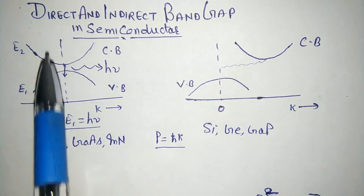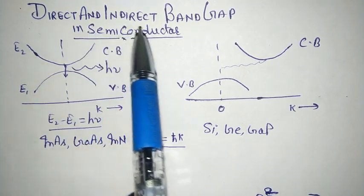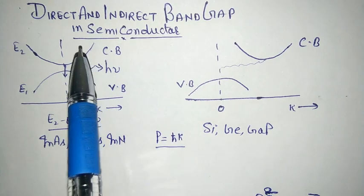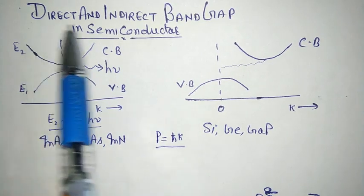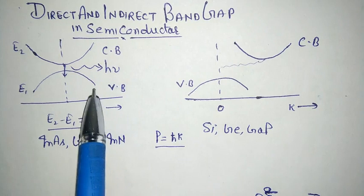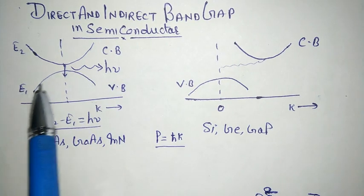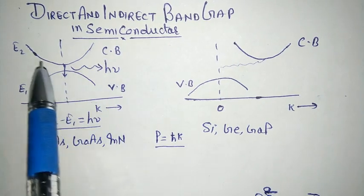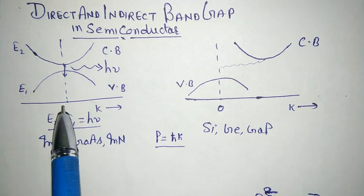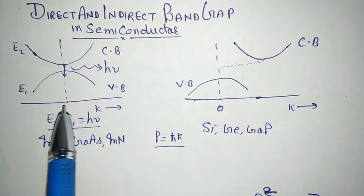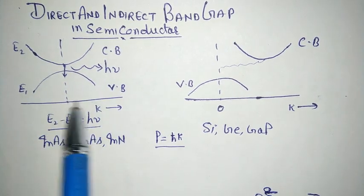In this lecture we will discuss direct and indirect band gap semiconductors. First, the direct band gap semiconductor: this is the valence band of energy E1 and this is the conduction band of energy E2. This axis is the dimension of energy level and this axis is the dimension of momentum.